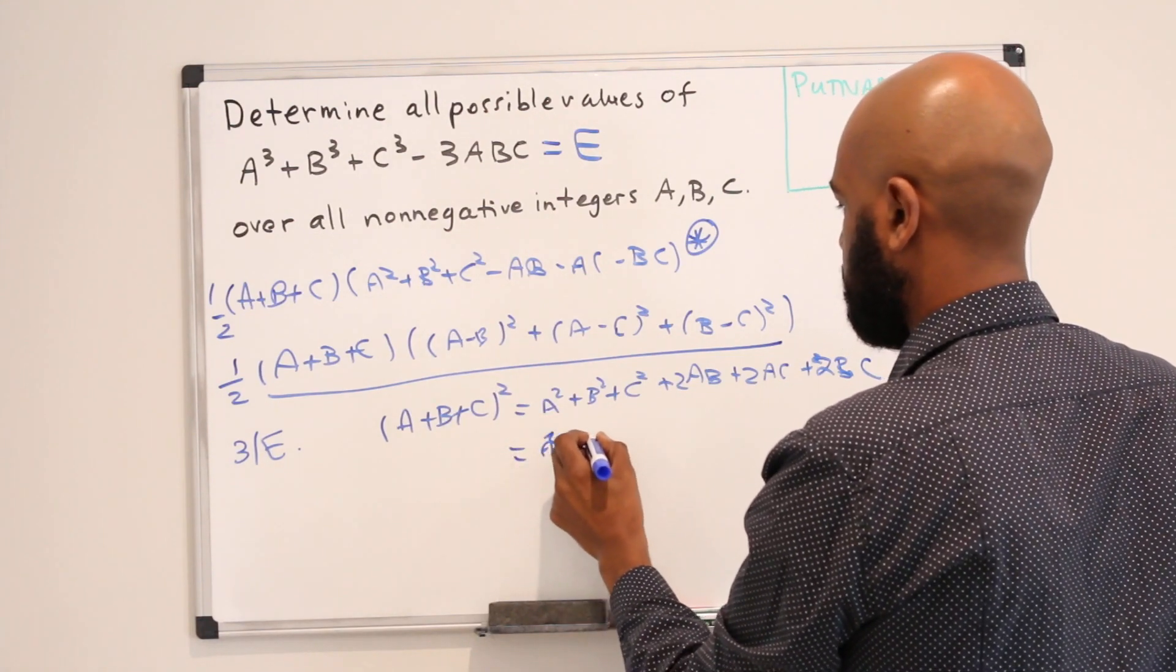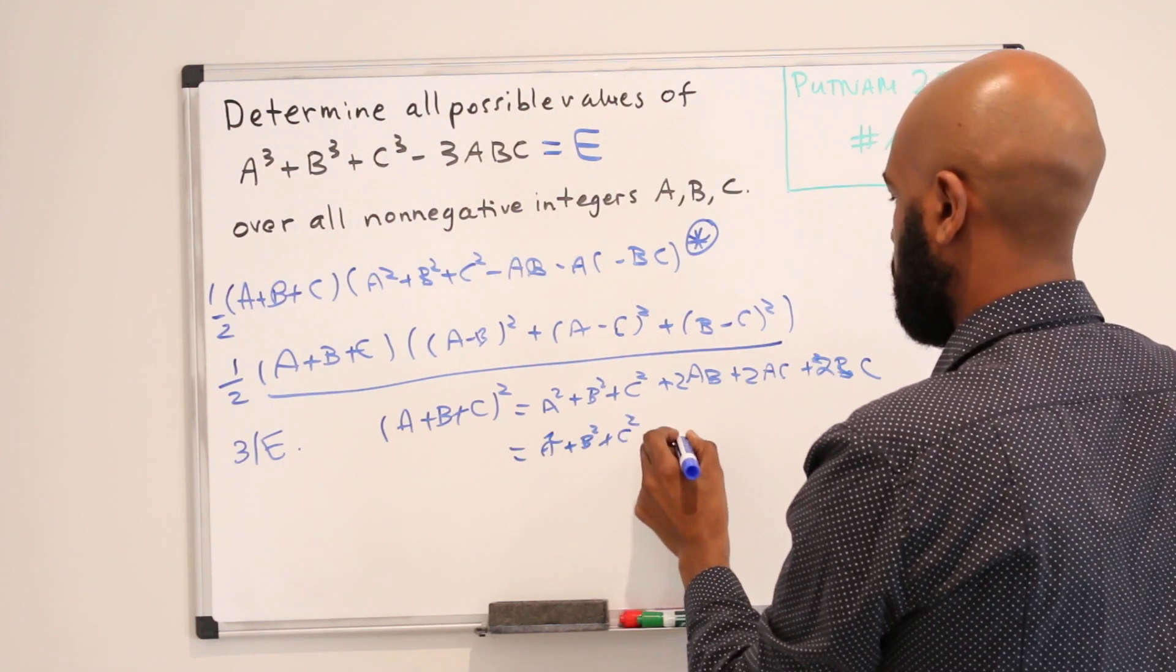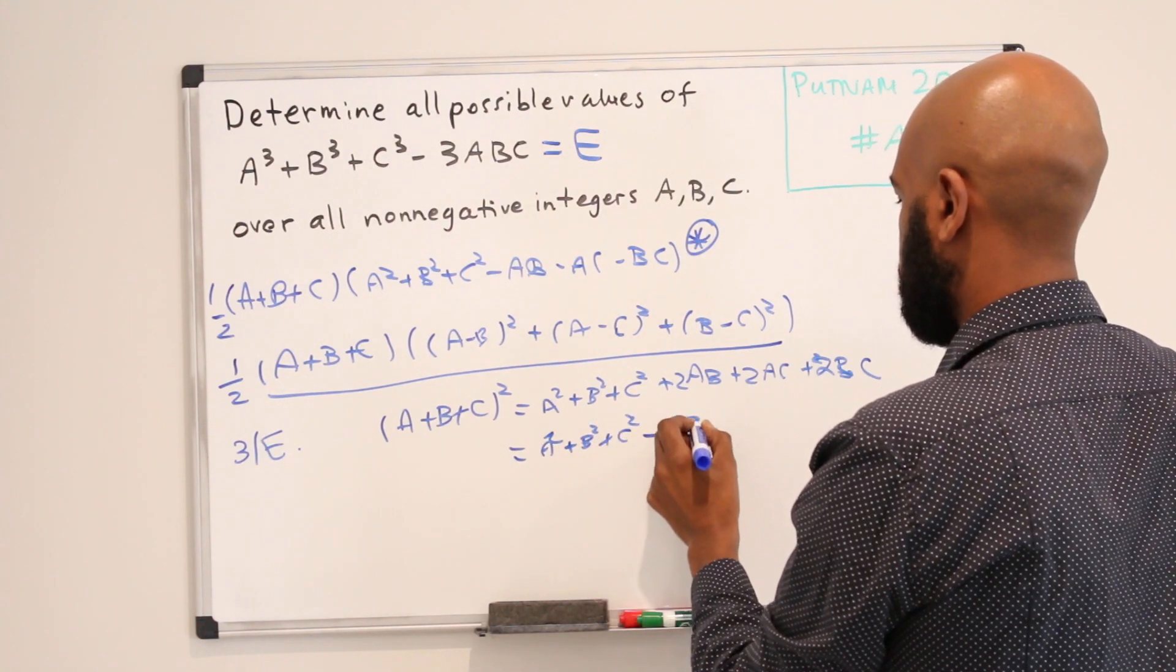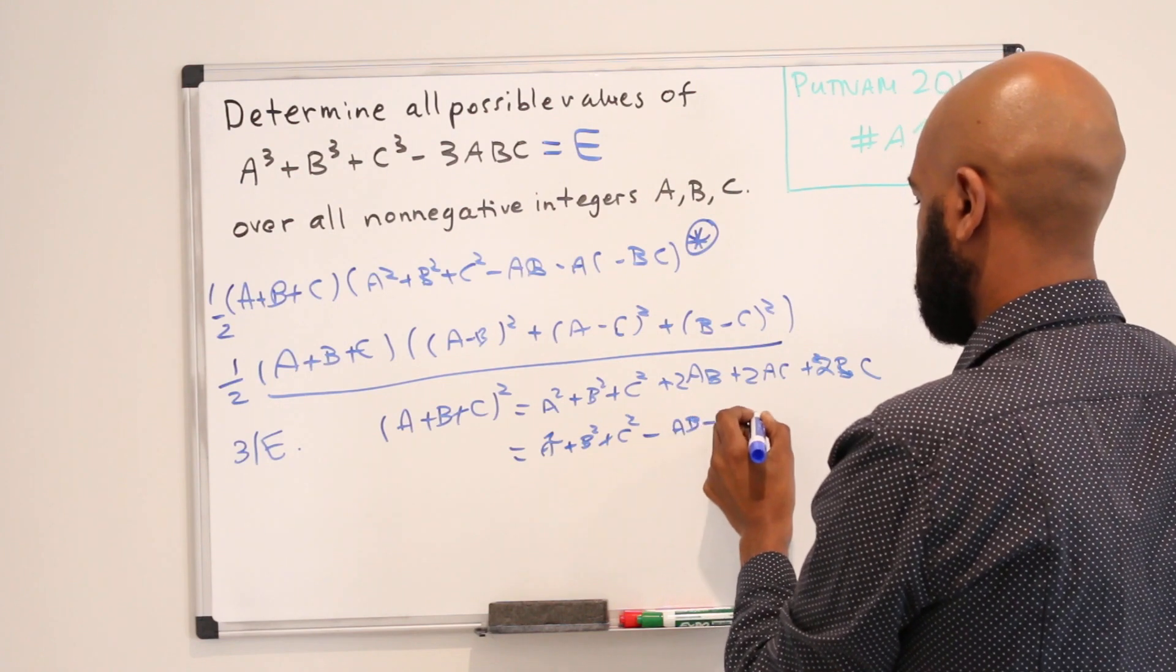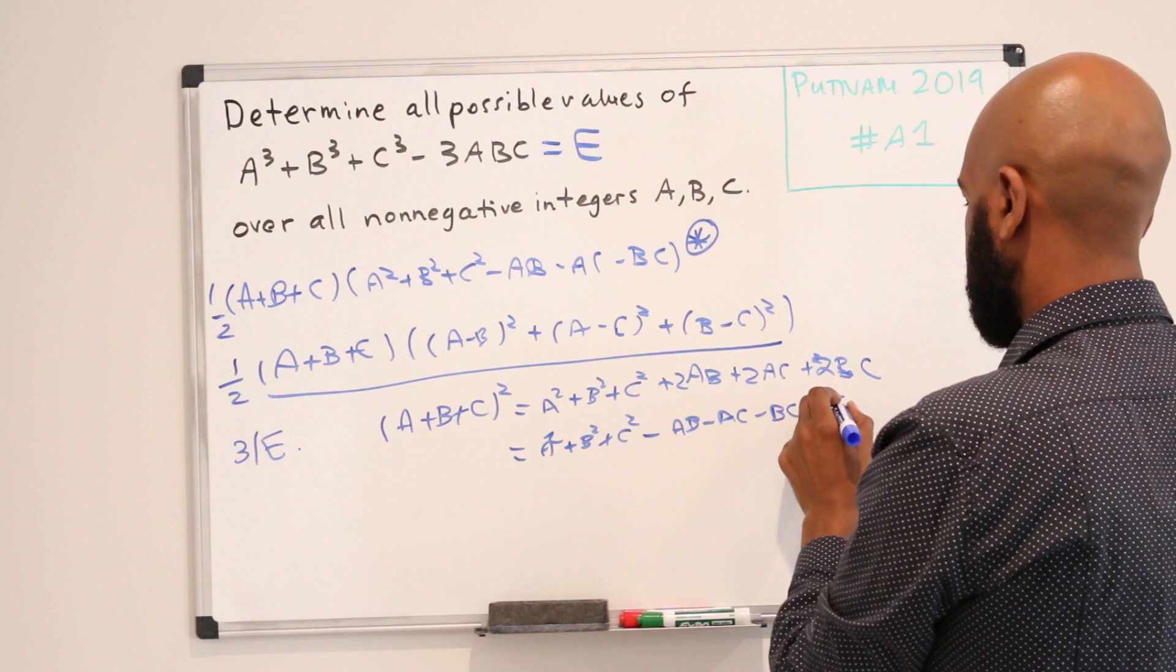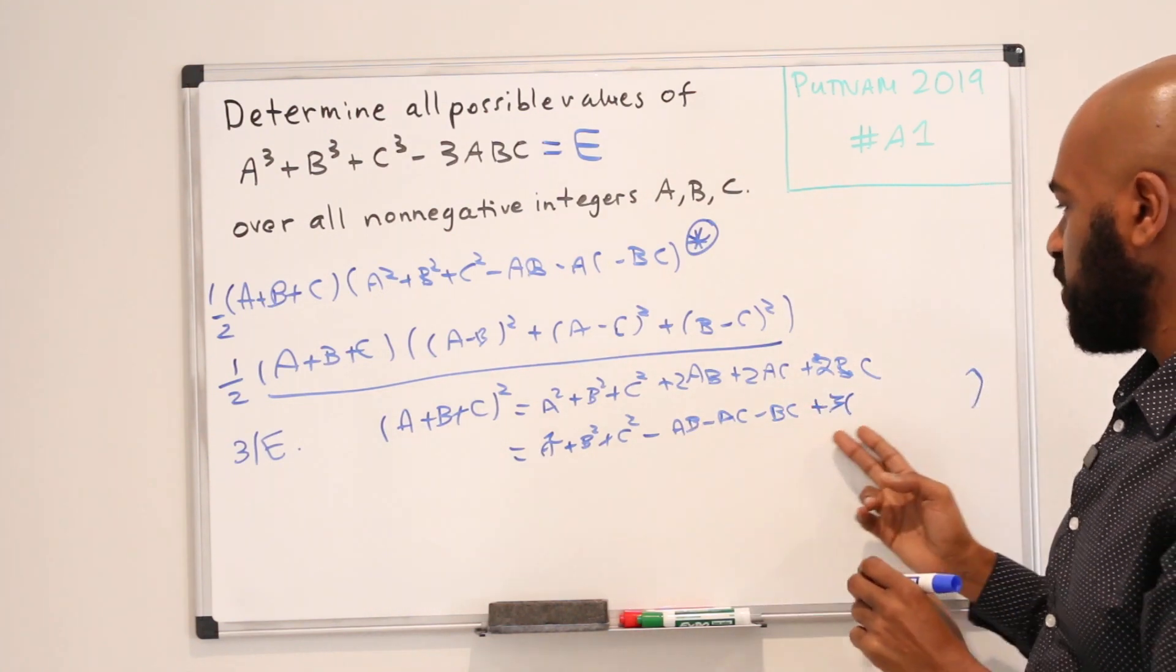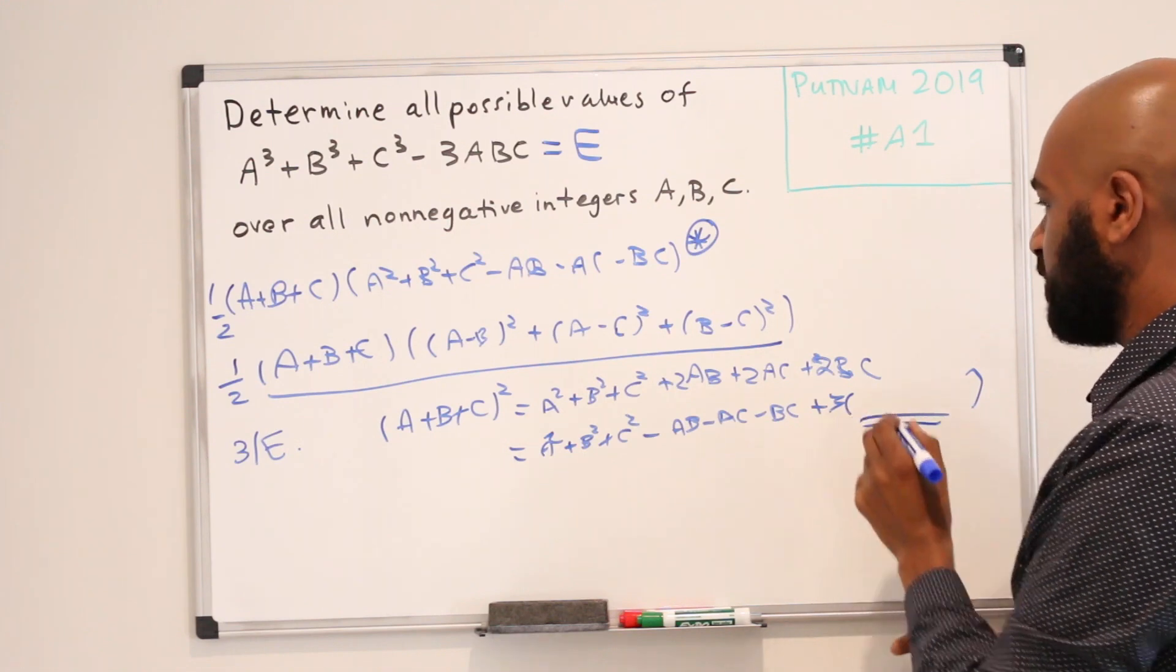A² + B² + C² - AB - AC - BC plus 3 times the sum of the pairs of products. I'm not going to write that down, but it's 3 times something. Okay, so what does that mean?